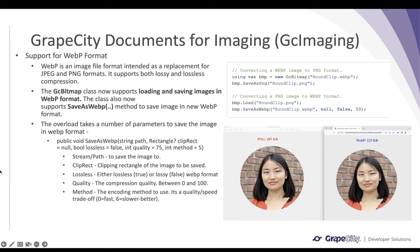Now covering the new features in GC Imaging — we have added support for the WebP format. It is an image format generally intended to replace JPEG and PNG, supporting both lossy and lossless compression, and providing high-quality rendering without affecting website performance. The GcBitmap class now supports loading and saving images in WebP format, and now also includes the saveAsWebp method, which takes parameters including the stream or path to save to, clip rect dimensions, lossy or lossless mode, and compression quality from 0 to 100.